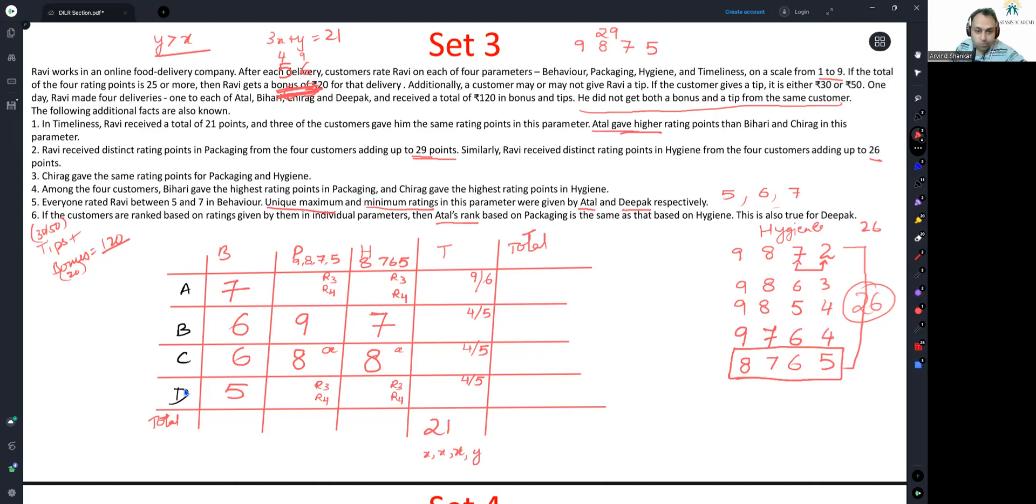Now look at some fun things. Regardless of whatever score Bihari gives in timeliness, can you see his total? 6 plus 9 plus 7, 6 plus 9 is 15, 15 plus 7 is 22. Regardless of what total he gives, 4 or 5, can I state with confidence Bihari is definitely giving a plus 20 bonus. Similarly for Chirag, 6 plus 8 plus 8 adds up to 22. Regardless of 4 or 5, the total will necessarily be greater than 25. So bonus of plus 20 is definitely coming Ravi's way.